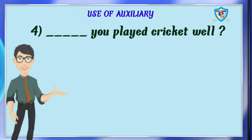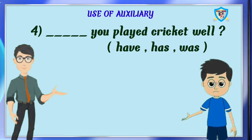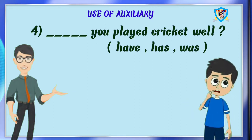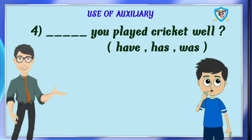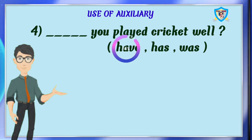Question 4: does you played cricket well? Options are have, has, was. Who can say the right answer? The answer is has. No, it is wrong. This sentence is an interrogative sentence and present perfect, so we have to use have. Have you played cricket well?